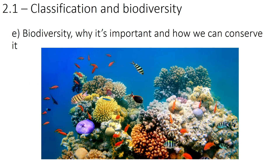Hi guys and welcome back to Ms Clark Does Science. Last time we talked about how animals and plants can have adaptations to survive in their environments. This time we'll be moving on to biodiversity — why it's important and how we can conserve it — as part of our classification and biodiversity unit, which is 2.1 in the biology specification or 4.1 if you're doing straight science.